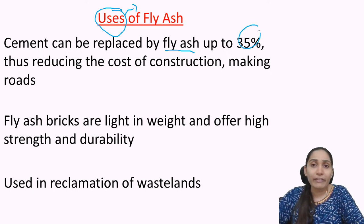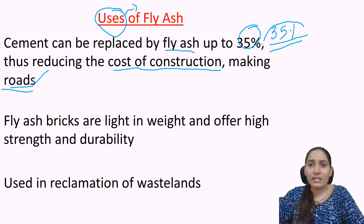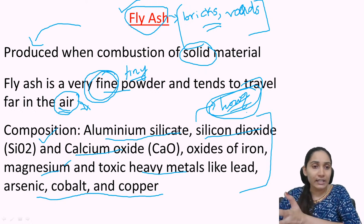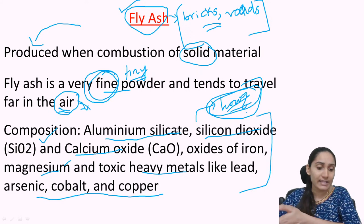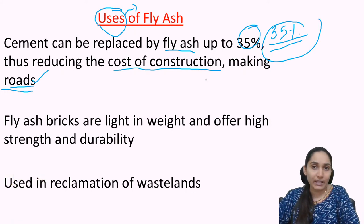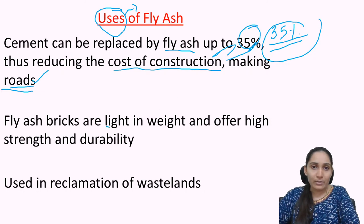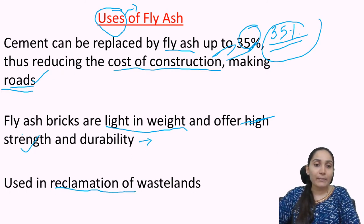Cement can be replaced by fly ash up to 35%, thus reducing the cost of construction. It can be used in making roads, buildings, and bridges. Because of its components — aluminium silicate, silicon dioxide, calcium oxide, iron and magnesium oxides — the strength is very high. Fly ash bricks are light in weight yet offer high strength and durability compared to normal bricks. Fly ash can also be used in reclamation of wastelands.